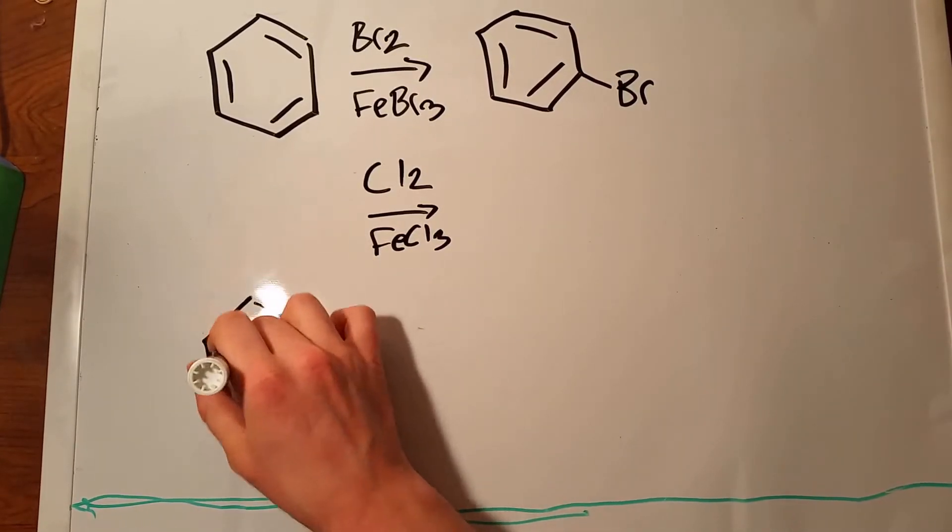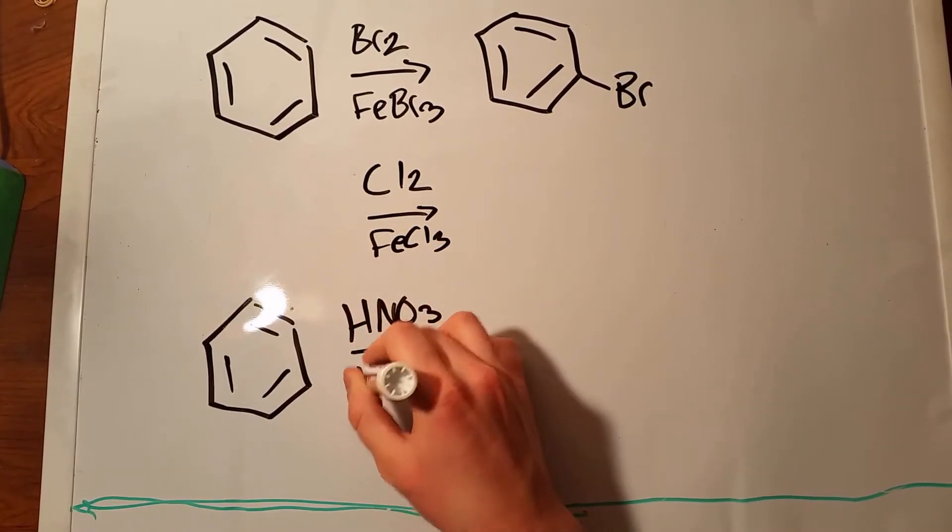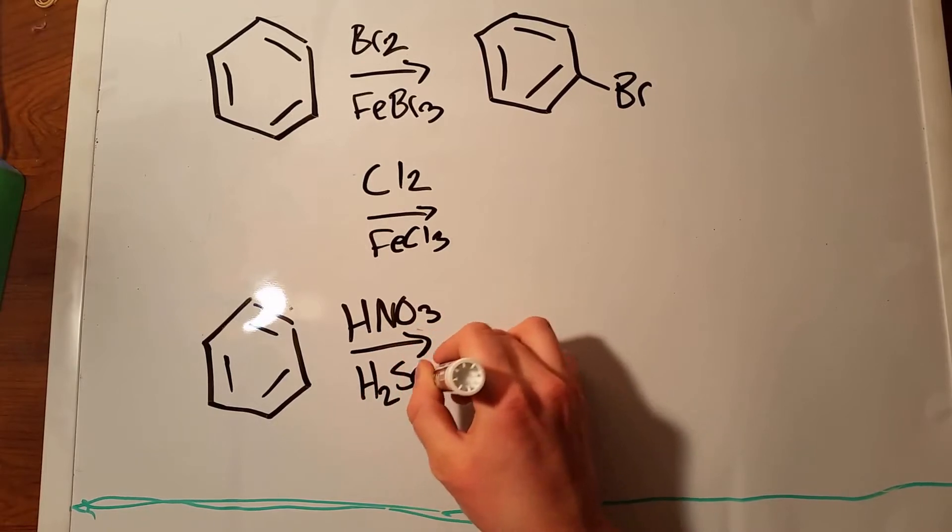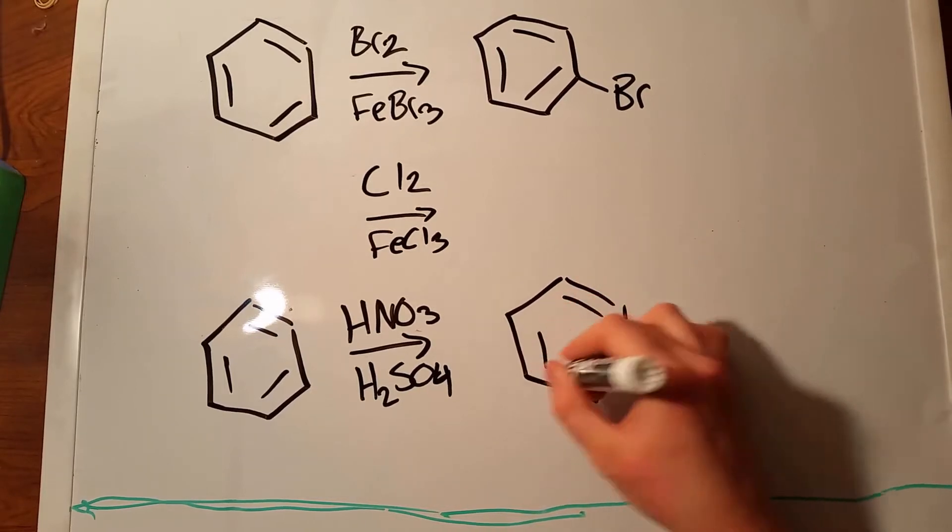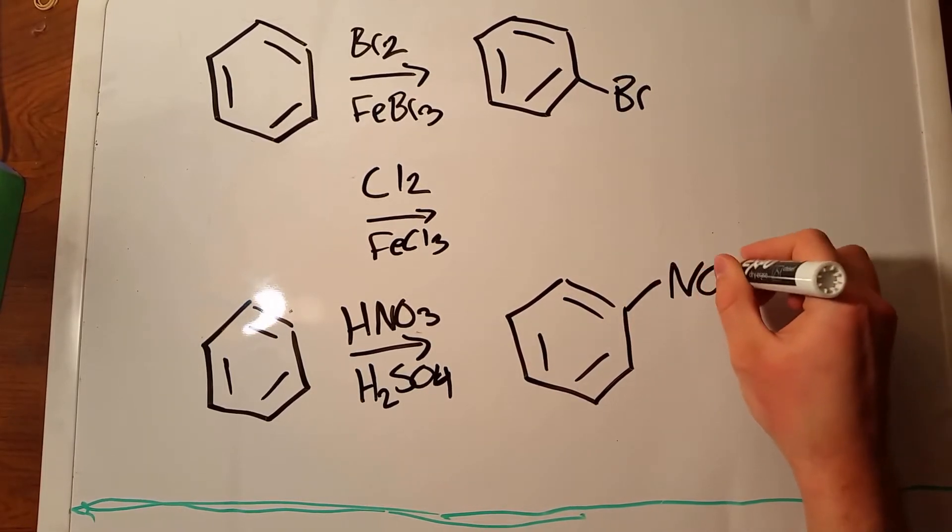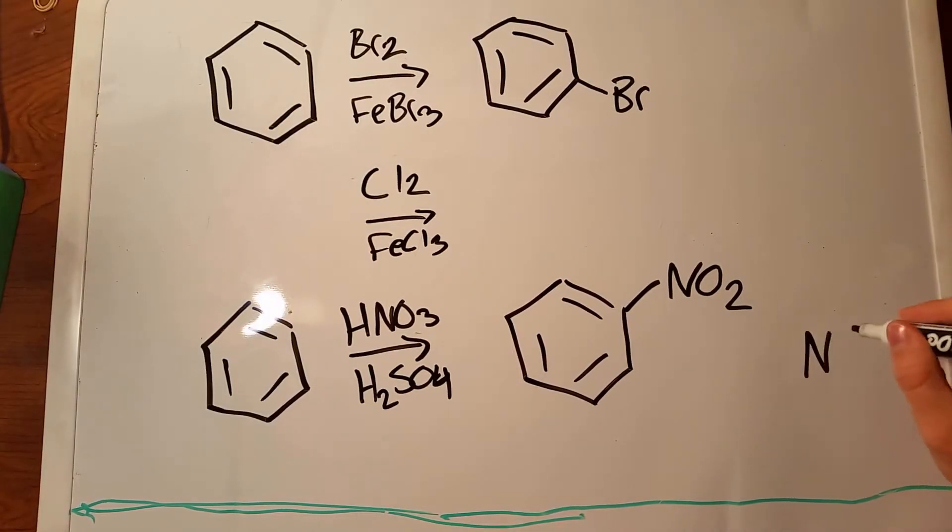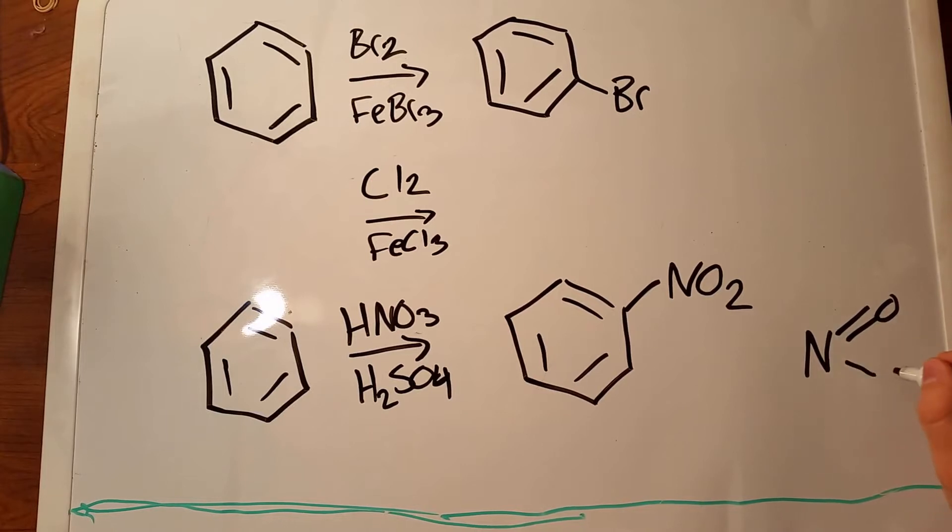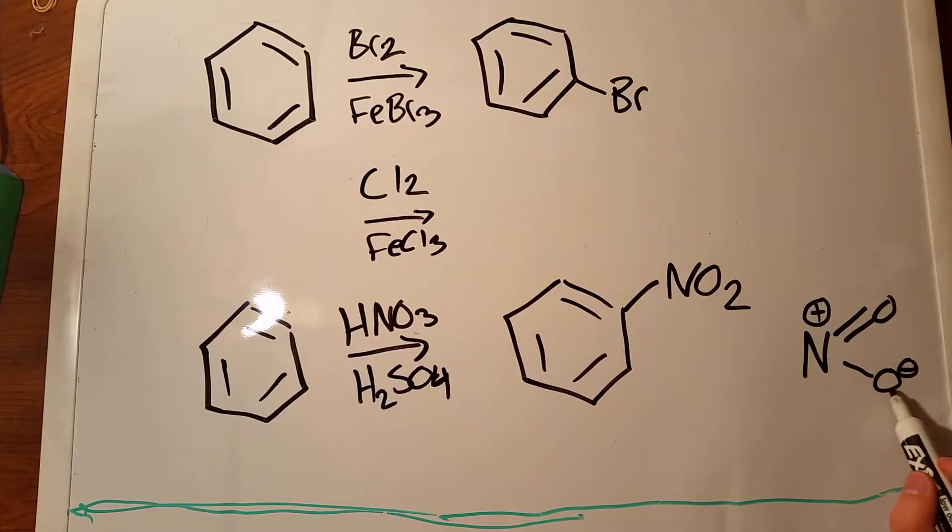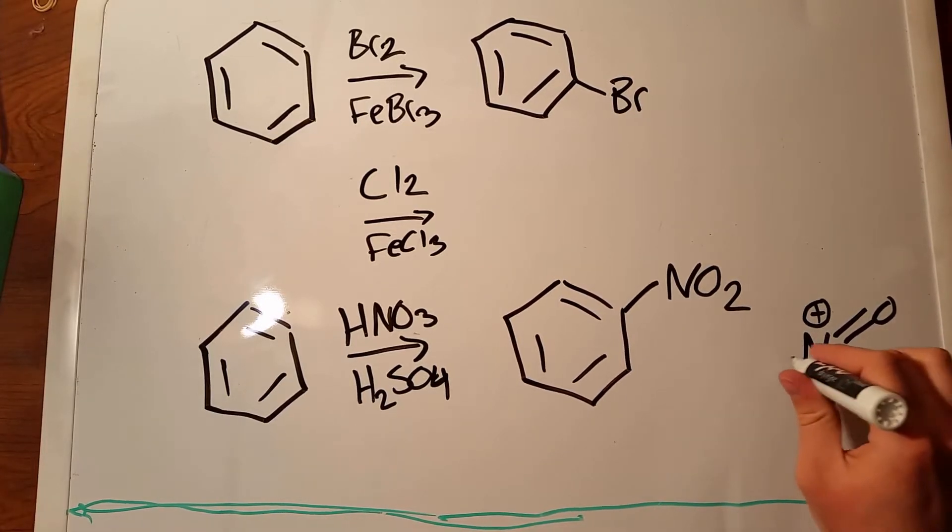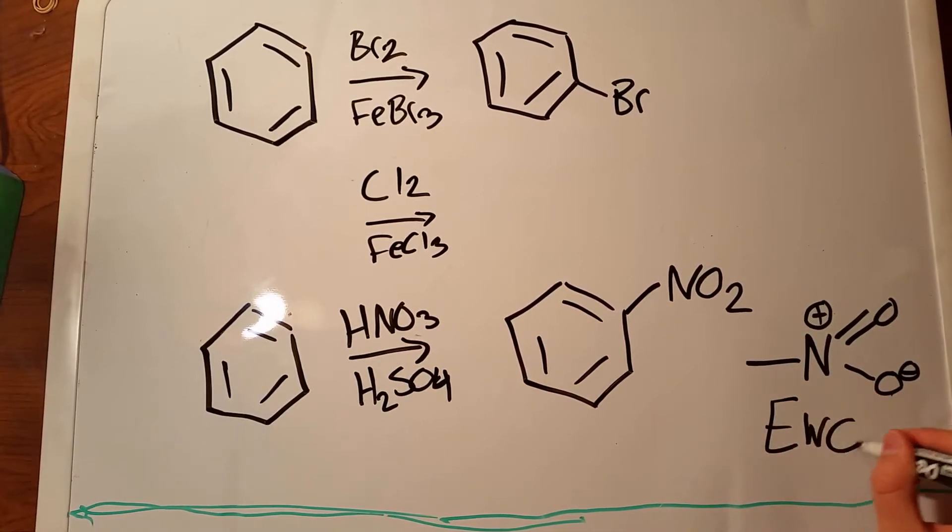Another reaction you need to know is, again starting with benzene, but this time reacting with HNO3 and H2SO4. What this does is it adds to your benzene an NO2 group. Now I'll mention this again in a little bit, but NO2 is a very powerful electron withdrawing group. What it looks like is a nitrogen with two oxygens attached, one that's negative and one that is double bond neutral, and so that nitrogen would be attached to the benzene there. Very strong electron withdrawing group.